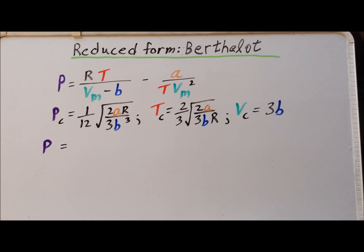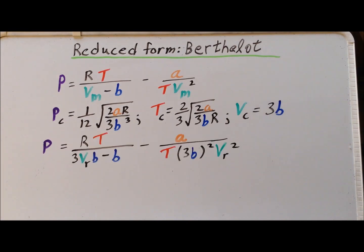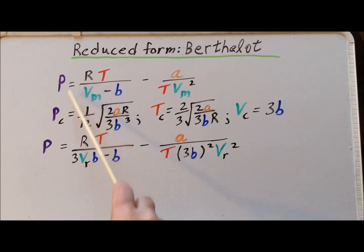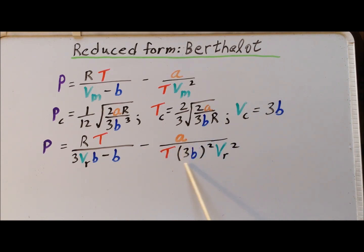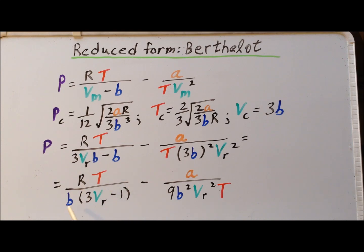We are now going to use the fact that the molar volume V is equal to the critical volume times the reduced volume V_R. So we substitute 3B times V_R in place of the molar volume in the Berthelot equation. Upon substituting, the denominator becomes 3V_R·B minus B, and for the right-hand term we have A divided by the temperature times 3B squared times the reduced volume squared. We then make some minor algebraic simplifications, giving us P equal to RT divided by B times the quantity 3V_R minus 1, minus A divided by 9B² V_R² times T.